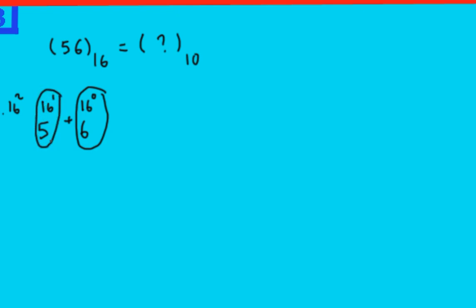this one with that one. 16 to the power of 1, which means, so we're going to do 16 to the power of 0 times 6, plus, 16 to the power of 1 times 5.